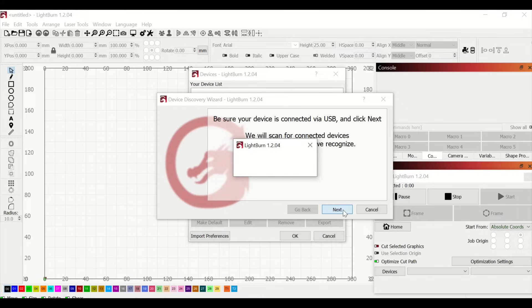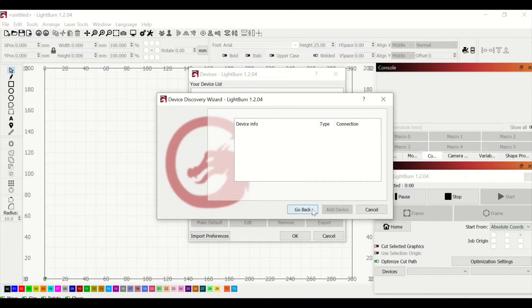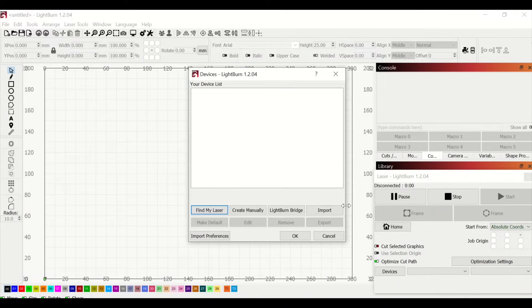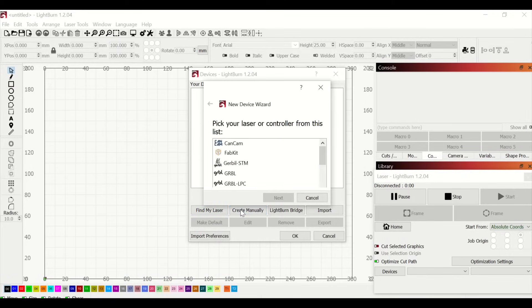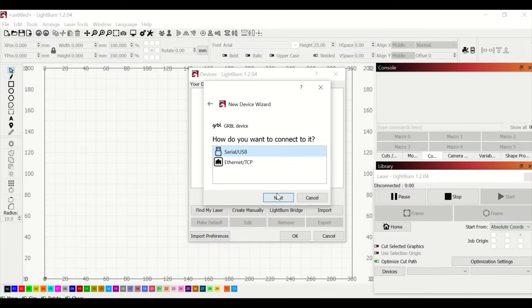When you first open up Lightburn it will prompt to find your laser. I ran the automatic device discovery wizard but this is what happened. Yes my laser was connected and turned on. So then I read the instructions and did the manual setup. I clicked on create manually and then selected GRBL as per the instructions. Next I selected serial USB.